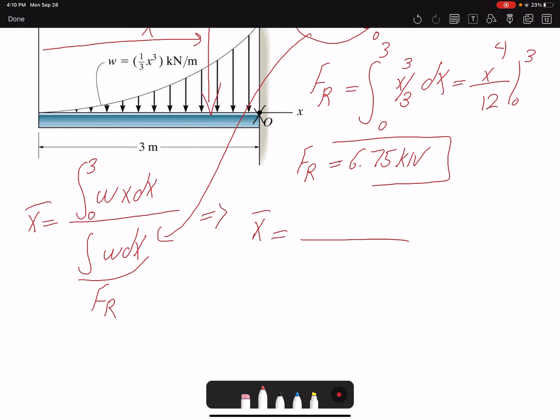For x̄, the numerator is w times x, which is x⁴/3 dx, and FR is 6.75 kilonewtons. Taking integration of the numerator: x⁵/(3×5) which is x⁵/15 from 0 to 3, divided by 6.75. So x̄ will be 2.4 meters.